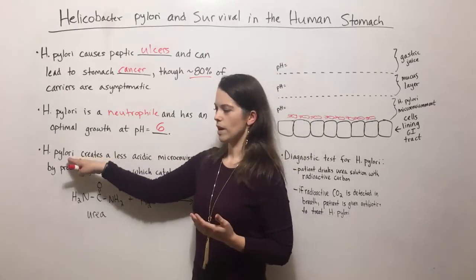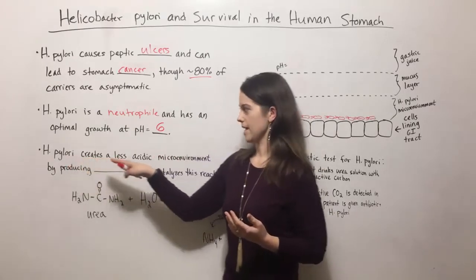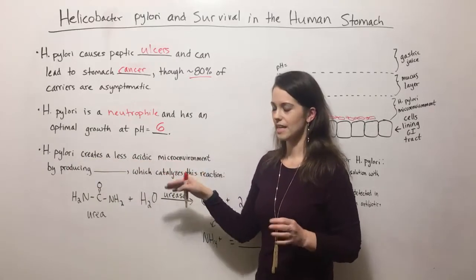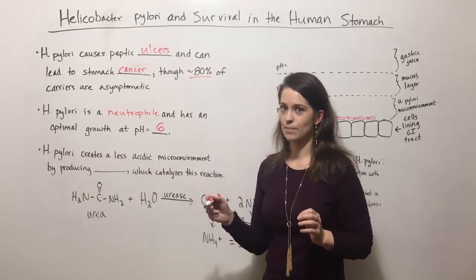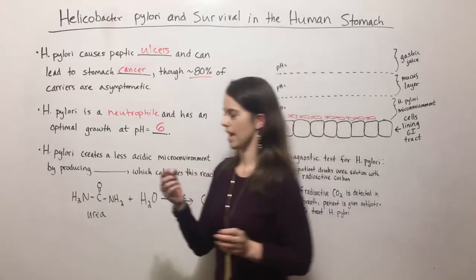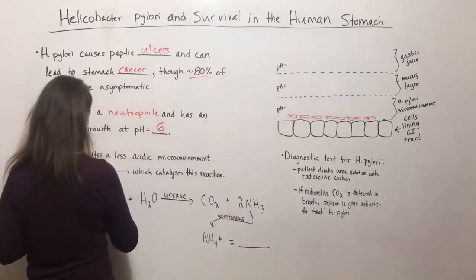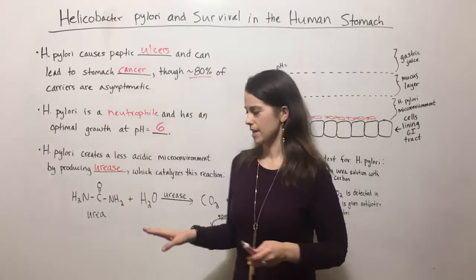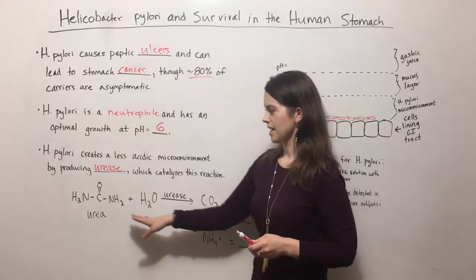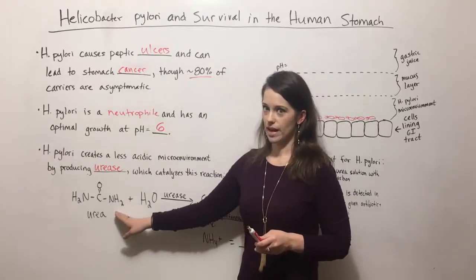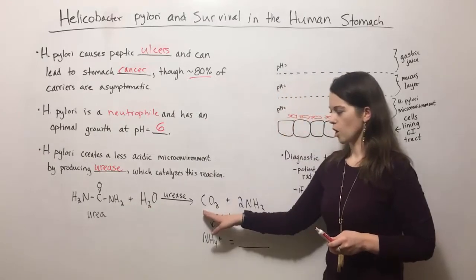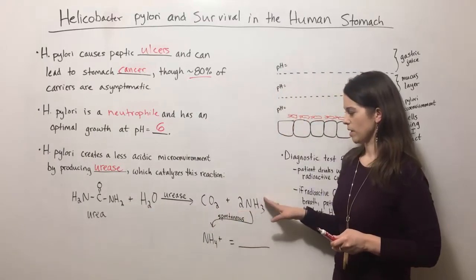Well, it works because H. pylori creates a less acidic microenvironment. It does this by producing an enzyme known as urease. It produces urease which catalyzes this reaction: it takes urea, reacts it with water to produce carbon dioxide and ammonia.